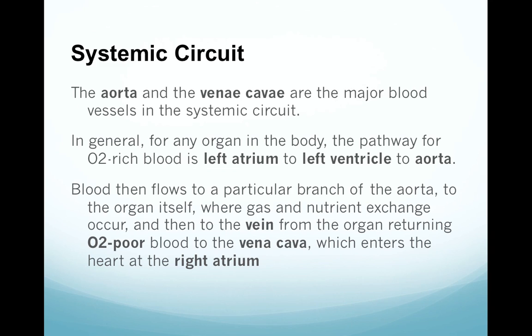The systemic circuit is the other half. The aorta and the vena cava are the major blood vessels in this circuit. For any organ in your body, blood drains through the vena cava and gets into the heart. Oxygen-rich blood goes from the left atrium — which received it from the lungs — to the left ventricle, to the aorta. The aorta pumps it out and branches into many smaller branches going to the organs. We then get into the capillary bed where gas and nutrient exchange occurs, and then the vein from that organ returns the oxygen-poor blood to the vena cava, which enters the heart at the right atrium.